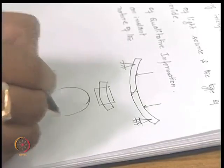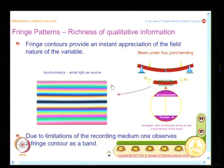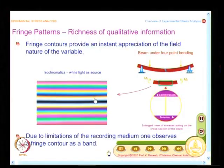Instead of a monochromatic light source, if I view the patterns in white light, I get not black and white contours, but contours with colour — contours with distinctive colour. This is the specific advantage of photoelasticity. By knowing the colour, it is possible to find out the fringe order. It is also easy to identify how the gradient information changes — whether it is increasing or decreasing in a direction — by checking whether the colour sequence is repeating in a particular fashion. You can identify positive and negative variants from this.